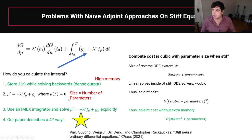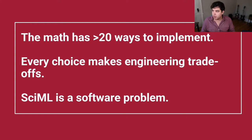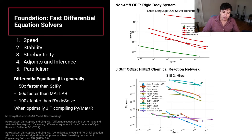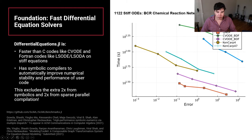These issues highlight that scientific machine learning is fundamentally a software problem. We've been building software that achieves about 100x speedup over MATLAB/Python/R for differential equation solves, and can outperform C and Fortran-based ODE solvers. We pair these solvers with many different adjoint implementations — representing different choices in that choice matrix. The performance difference between adjoint implementations can be about four orders of magnitude for stiff PDEs.